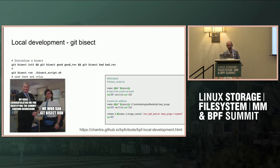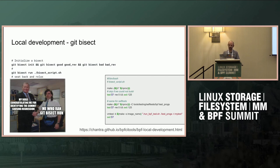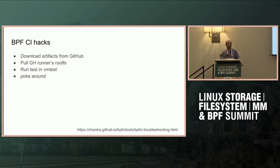My favorite trick to look smart is git bisect. Using the script on the left, you tell git bisect your good commit and your bad one, then tell it to run the script. If the script returns 1 it's bad, 0 it's good, 125 means it doesn't know. In the script you build the kernel, build the selftests, and run your repro — in this case a specific test. vm_test returns the error code from the command, so you can kick off git bisect, go relax, and come back to find what introduced the regression.